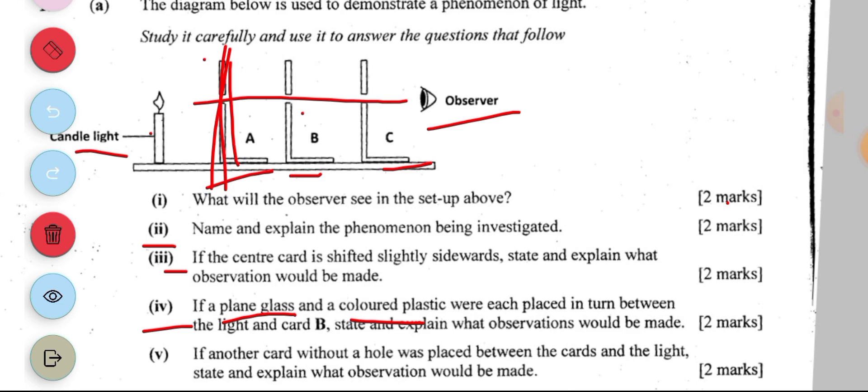The light can be seen by the observer. This simply because glass is transparent and therefore light will pass through, just that the light will be colored because of the colored plastic.